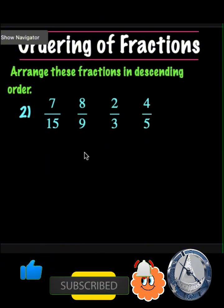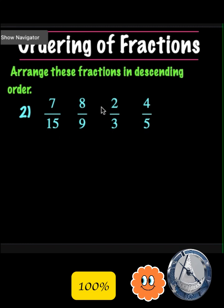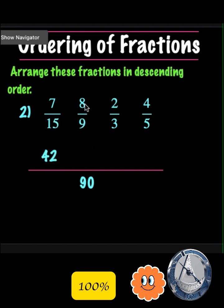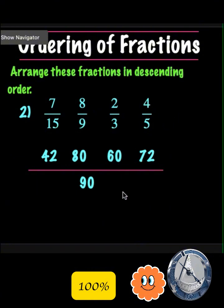Number 2: arrange this fraction in descending order. The numerators are different and the denominators are different, so we use the LCM method. The LCM of 10, 9, 3, and 5 is 90. 90 divided by 15 gives 6; 6 times 7 is 42. 90 divided by 9 gives 10; 10 times 8 is 80. 90 divided by 3 gives 30; 30 times 2 is 60. 90 divided by 5 gives 18; 18 times 4 is 72. Arranging in descending order from biggest to smallest: 8 over 9, followed by 4 over 5, then 2 over 3, and the smallest fraction is 7 over 15.